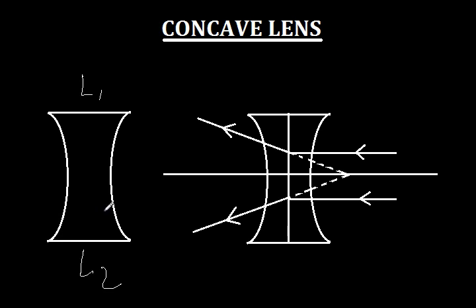Another characteristic of a concave lens is that if a beam of light parallel to the principal axis hits a concave lens, the rays will diverge after being refracted by the lens. This capacity of diverging a parallel beam of light into a divergent beam is called the diverging capacity, and this is why a concave lens is also called a diverging lens.